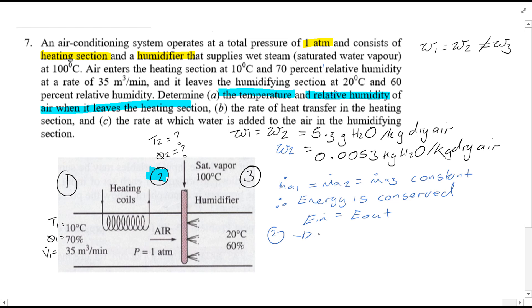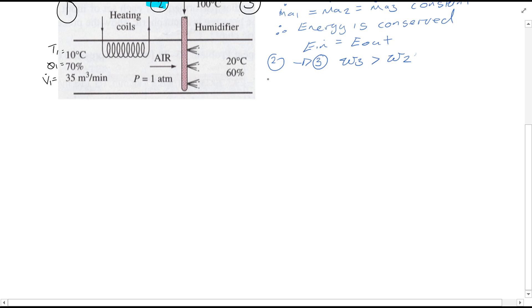Considering process 2 to 3, we know that since humidification is occurring, omega 3 is going to be greater than omega 2. It's not equal. Okay, so considering that energy balance equation.